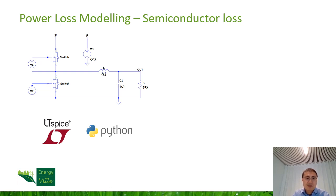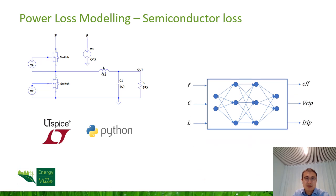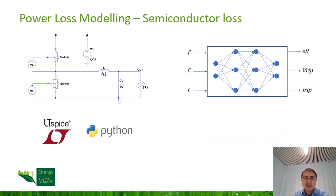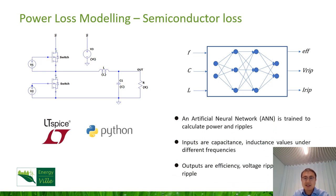However, SPICE simulations can take a lot of time when the frequency is high. So in order to obtain an accurate efficiency model and also accelerate the optimization procedure, the data from SPICE simulation are collected to train an artificial neural network. As you can see here, with the input of frequency, capacitance, and inductance values, we can get an output of the efficiency, voltage ripple, and also current ripples.